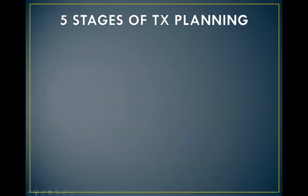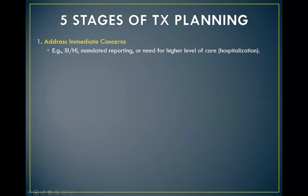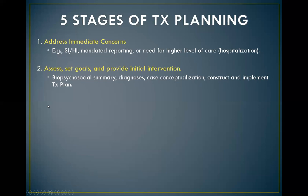There are five stages of treatment planning. The first stage is to always address any immediate concerns. So if a person comes in expressing suicidal ideation or homicidal ideation, there might be mandated reporting issues, or they may need a higher level of care. That's the first stage — making sure you've addressed any immediate concerns. Not everybody comes in with SI/HI, but if you're doing your assessments appropriately, you're already assessing for all of this, and if it comes up, that's the first thing addressed in treatment planning.